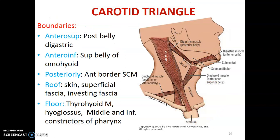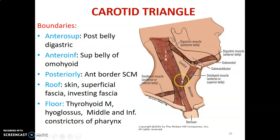The carotid triangle: boundaries are the posterior belly of the digastric superiorly and anteriorly, the superior belly of omohyoid anteriorly and inferiorly, and the anterior border of the sternocleidomastoid posteriorly. The roof is formed by skin, superficial fascia, and investing fascia. The floor is formed by thyrohyoid muscle, hyoglossus, and the middle and inferior constrictors of the pharynx.